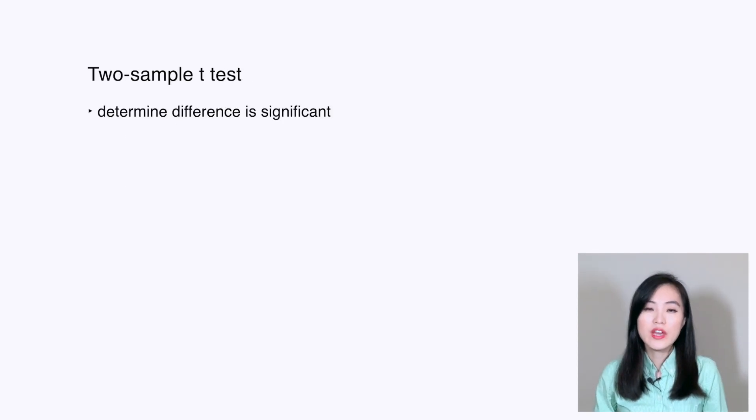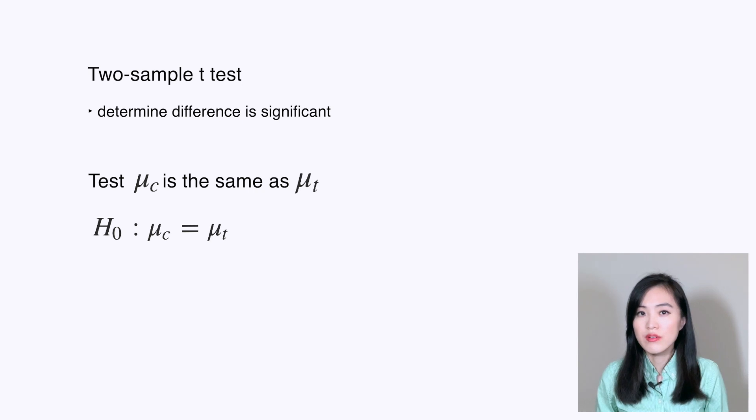Typically, we can use two-sample t-tests to determine whether the difference between two populations is statistically significant. Let's say we want to test if a metric in the control group μ_c is the same as that of the treatment μ_t. Then our null hypothesis H₀ is μ_c equals μ_t, and the alternative hypothesis is μ_c does not equal μ_t.